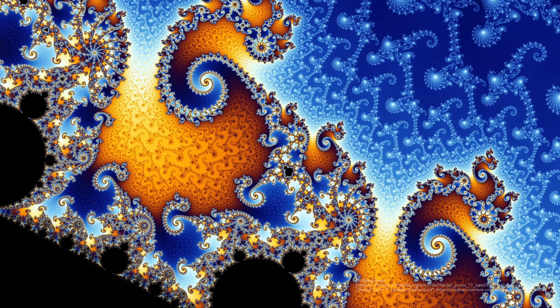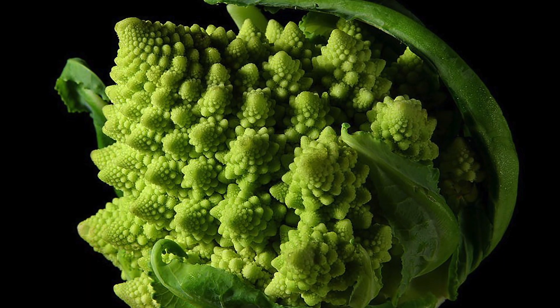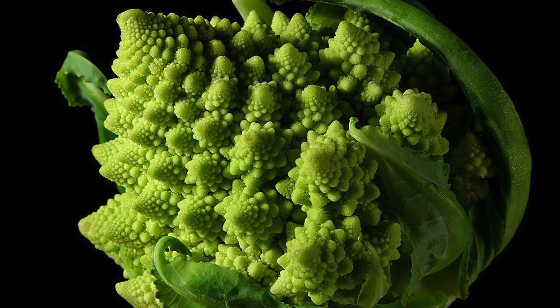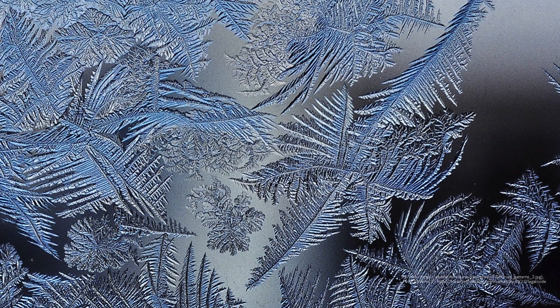Many artists use mathematical patterns to create striking works of art. One type of pattern that can be seen in both art and nature is geometric fractals. You can see geometric fractals throughout nature, for example in the shape of a snowflake.